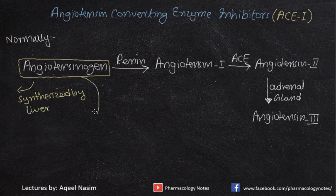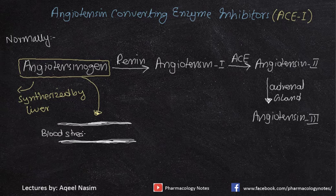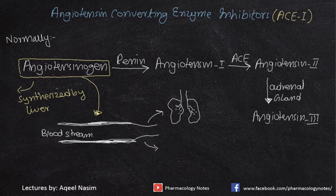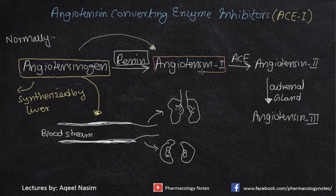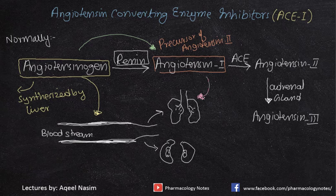Angiotensinogen is synthesized by the liver, which is then taken up by the bloodstream. Whenever blood pressure falls below normal levels, angiotensinogen synthesized by the liver is transferred to the bloodstream and flows to other bodily organs like the lungs and kidneys. The enzyme renin, which is produced by the kidneys, is responsible for conversion of angiotensinogen into angiotensin 1.